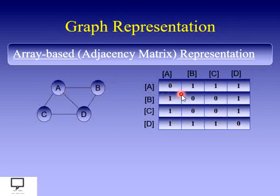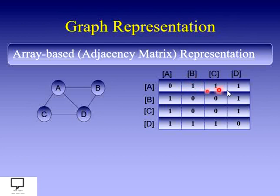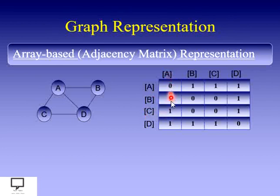B to B, C to C, and D to D are also 0. But A is connected to node B, node C, and node D — so those are represented with 1. Since this is an undirected graph, B is also connected to A, so B to A is 1; C to A is 1; and D to A is 1.